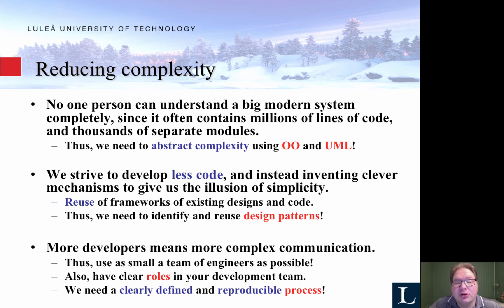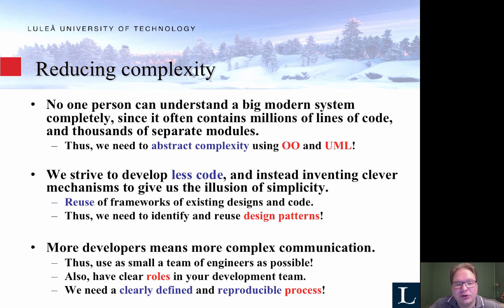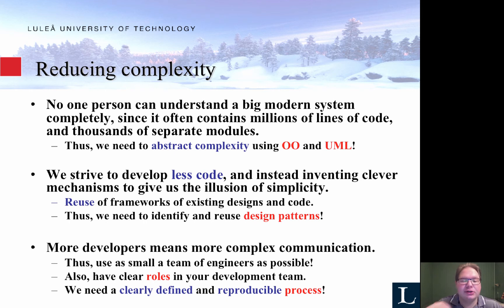For instance, we can use object-oriented systems programming. We use something called Unified Modeling Language, UML, for designing and modeling the software before developing it. We are trying to develop less code because having lots and lots of code makes it difficult to understand. We're trying to instead use better frameworks, use existing designs, structure the code better, and reuse code. For this, we can use something called design patterns, and that will be covered in other lectures of this course.